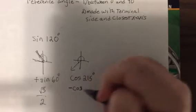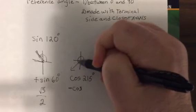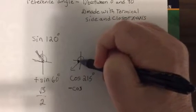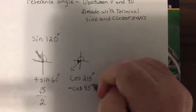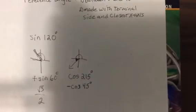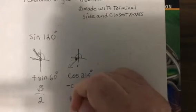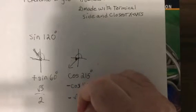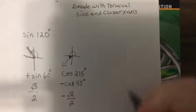Then we need to find the reference angle. Well, how many degrees is it between the terminal side and the closest X axis? Well, that would be 45. And look at our chart, we have it right there. It's square root of 2 over 2, so it'd be negative square root of 2 over 2.